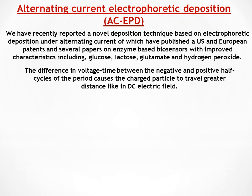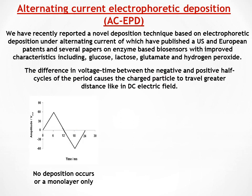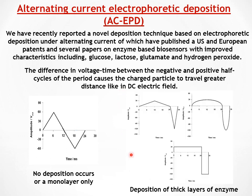The drifting of the charged particles in the AC field is due to the difference in voltage time between the two half cycles of the period. In other words, if symmetrical signals are used, no deposition occurs or at most a monolayer forms. However, if asymmetrical signals are used, deposition of thick layers of enzymes occurs in a short period of time.